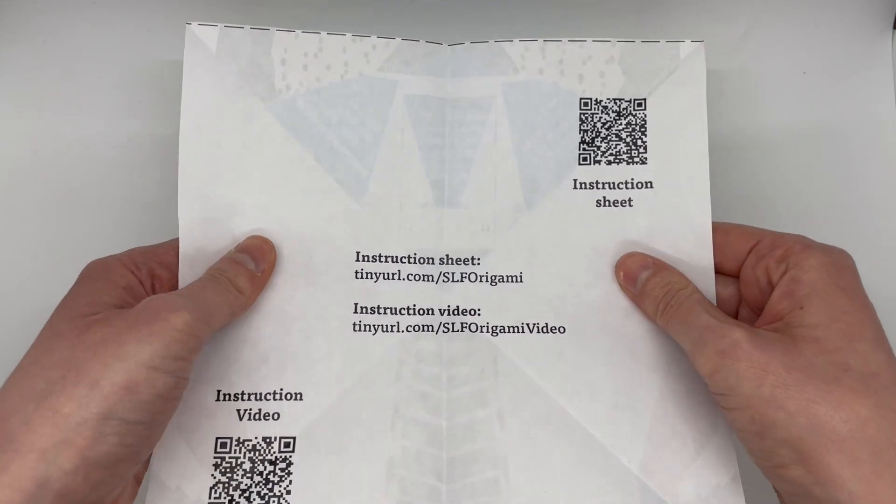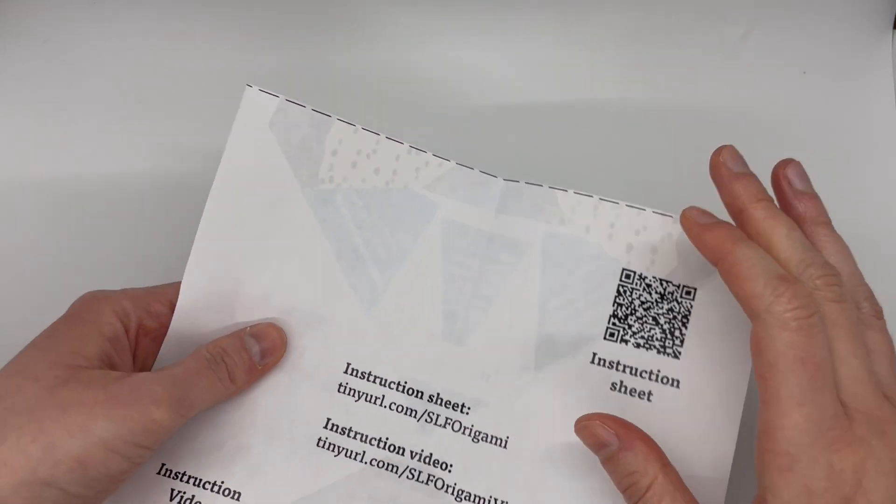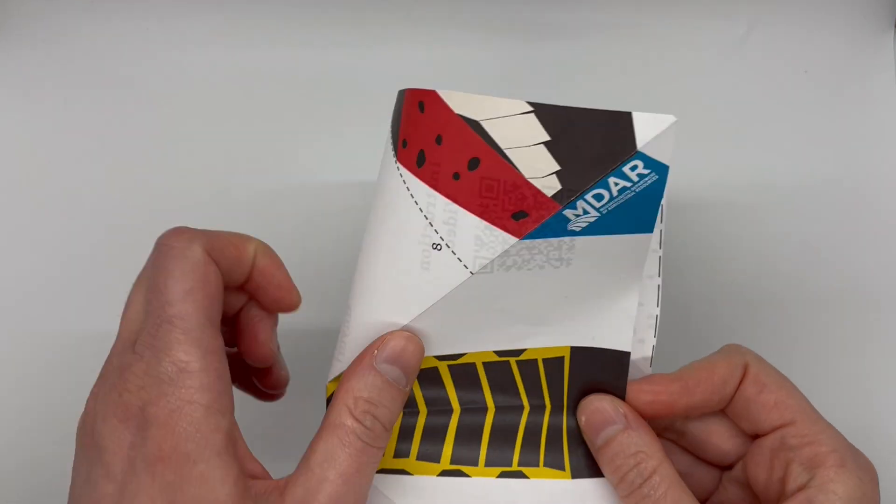Unfold. Fold the paper in half along the horizontal line.